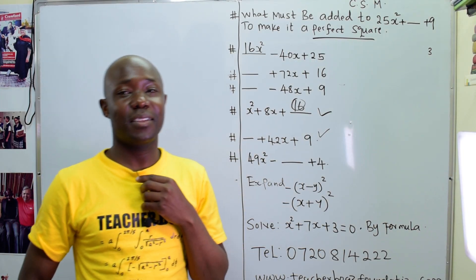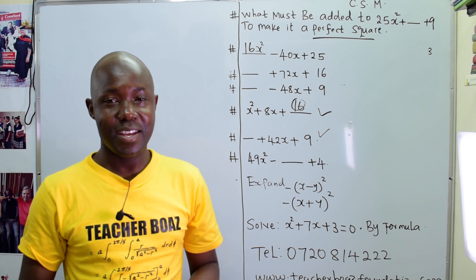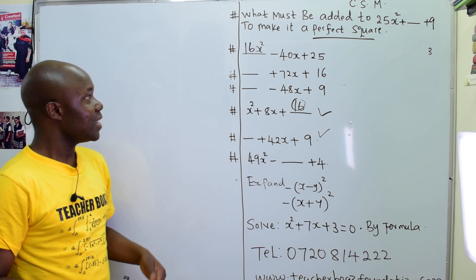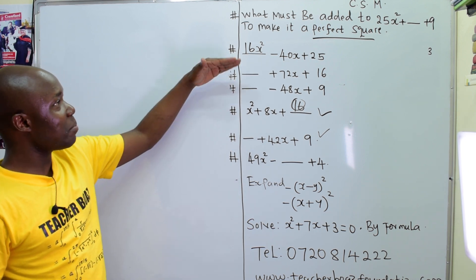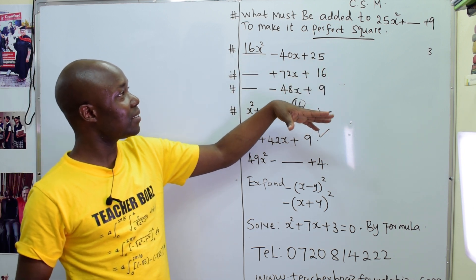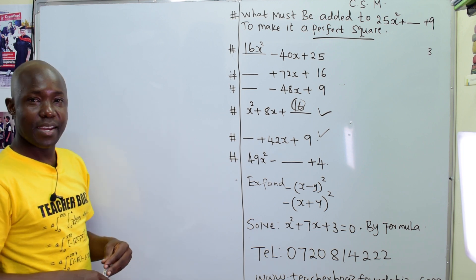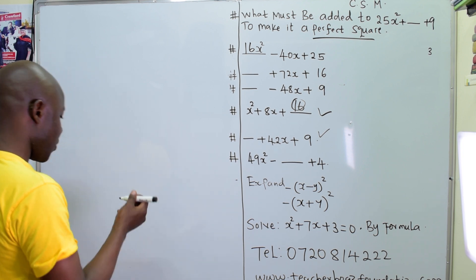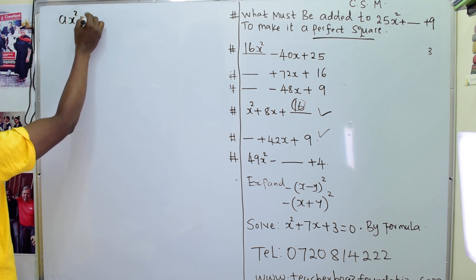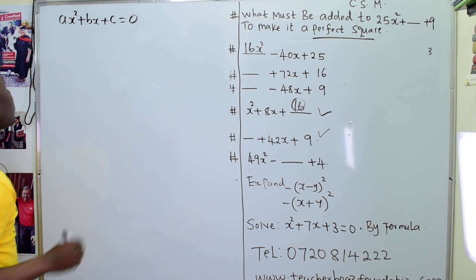Hi guys, I am Boaz, your mathematics teacher. Today we are going to deal with quadratic equations. They're asking: what must be added to 25x squared plus dash plus 9 to make it a perfect square. In quadratic, we know it is in the form ax squared plus bx plus c equals 0.